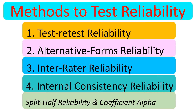The first one is test-retest reliability. The second is alternative or equivalent — sometimes called parallel form — reliability. The third is inter-rater reliability, and the fourth is internal consistency reliability, which is subdivided into two: split-half reliability and coefficient alpha.